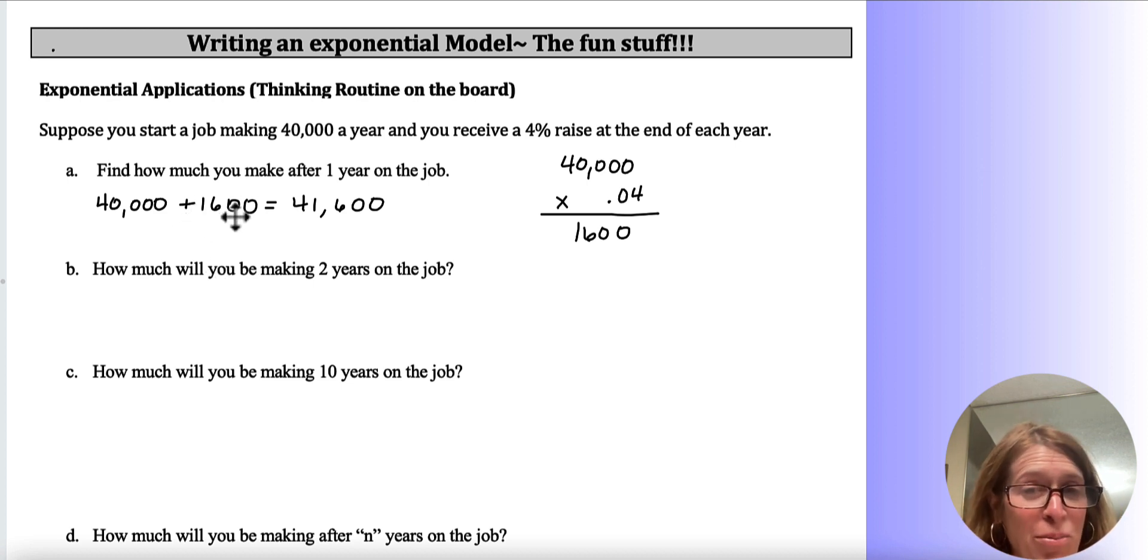That's about standard, 3% to 4%, sometimes 5%. All right, if I asked you how much you'll be making two years on the job, well, then you'd take $41,600, right? And you'd multiply it by 4%, and you would get, I calculated this already, it was $1,664. And then you'd add it.